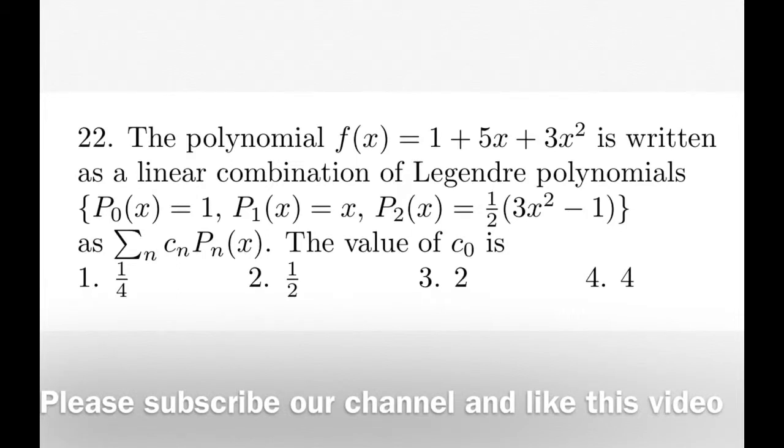The Legendre polynomials are given: P₀(x), P₁(x), and P₂(x). Suppose we write the polynomial f(x) as a linear sum, which is called linear combination, as summation cₙPₙ(x). So we want to express f(x) in terms of P₀, P₁, P₂ so that the coefficients are only constants - we cannot multiply any power of x or anything.